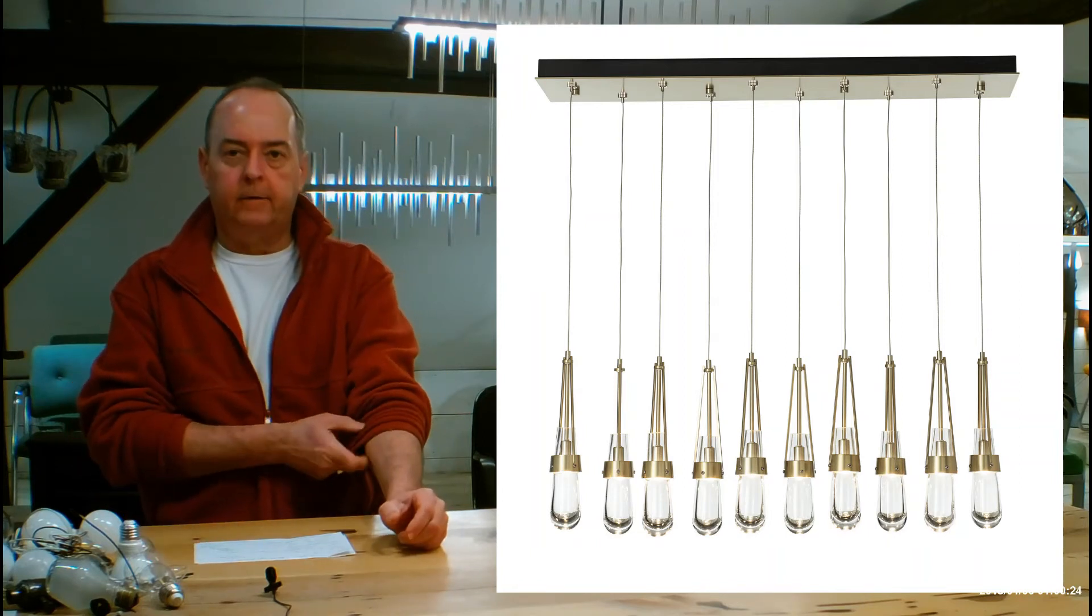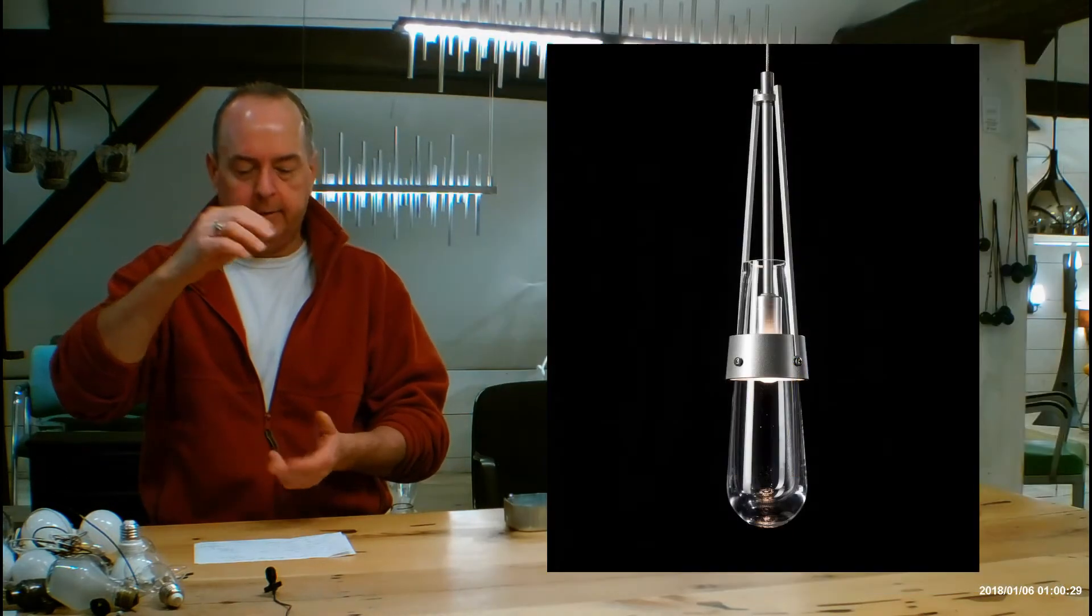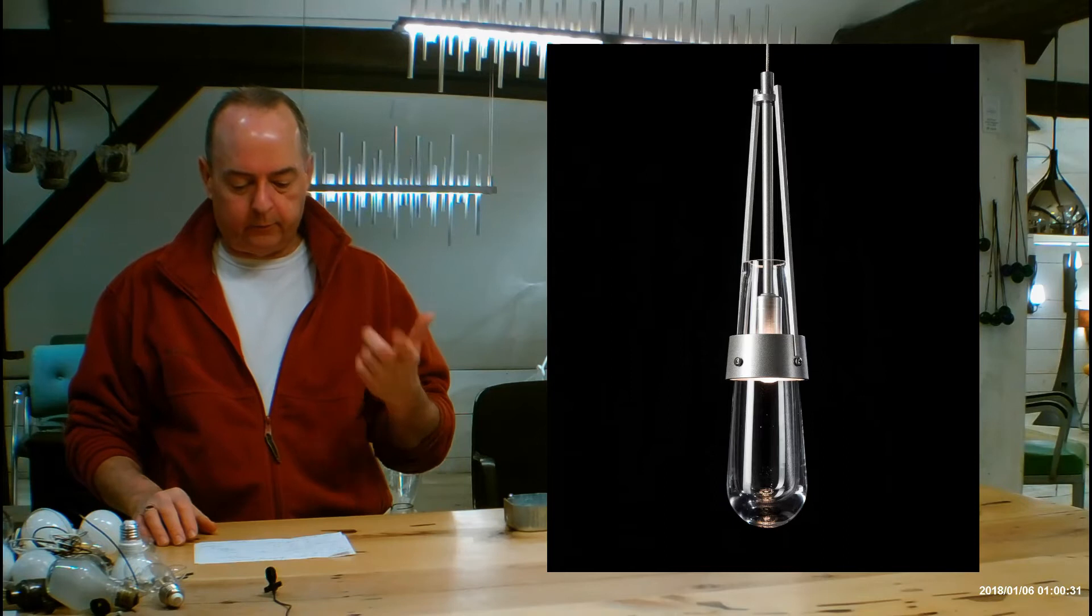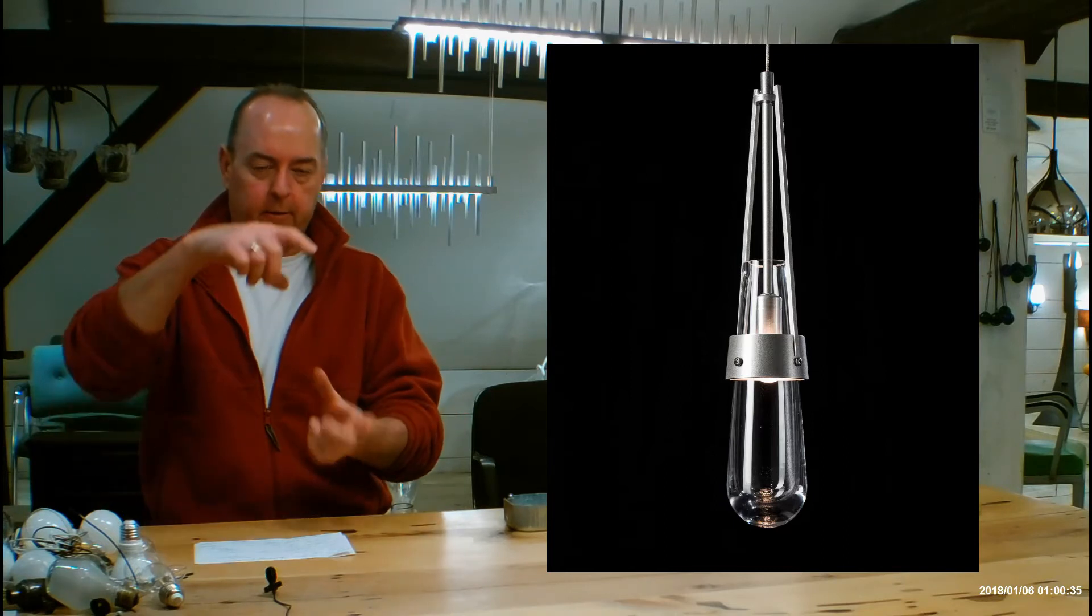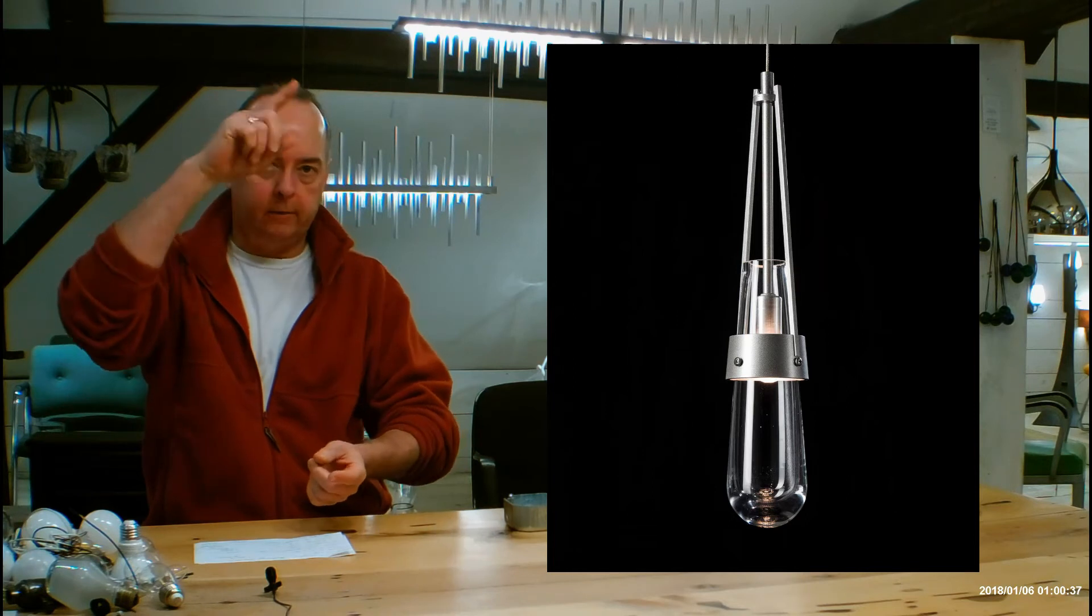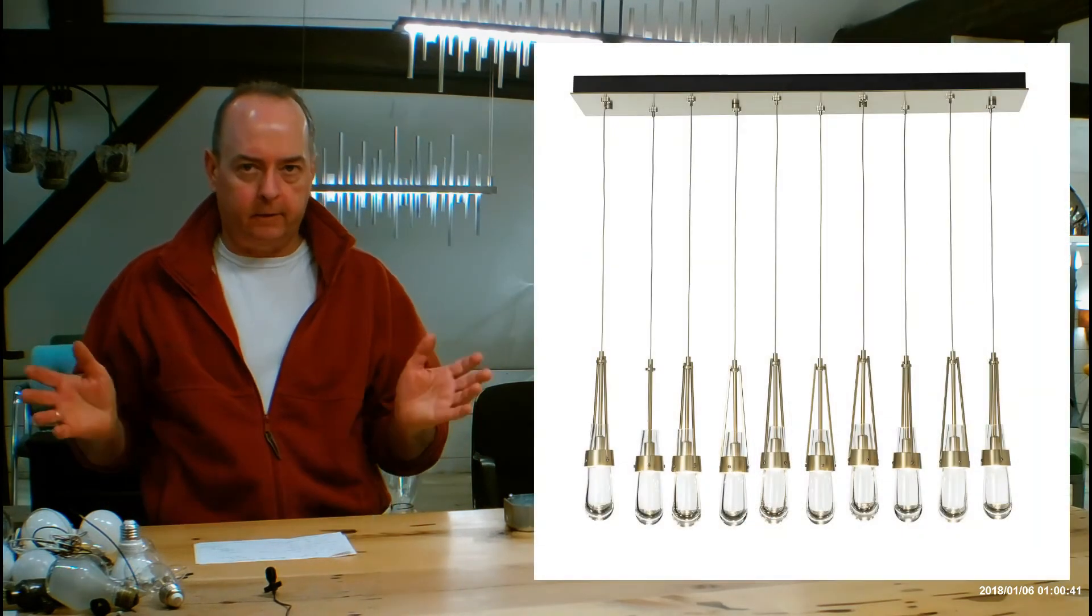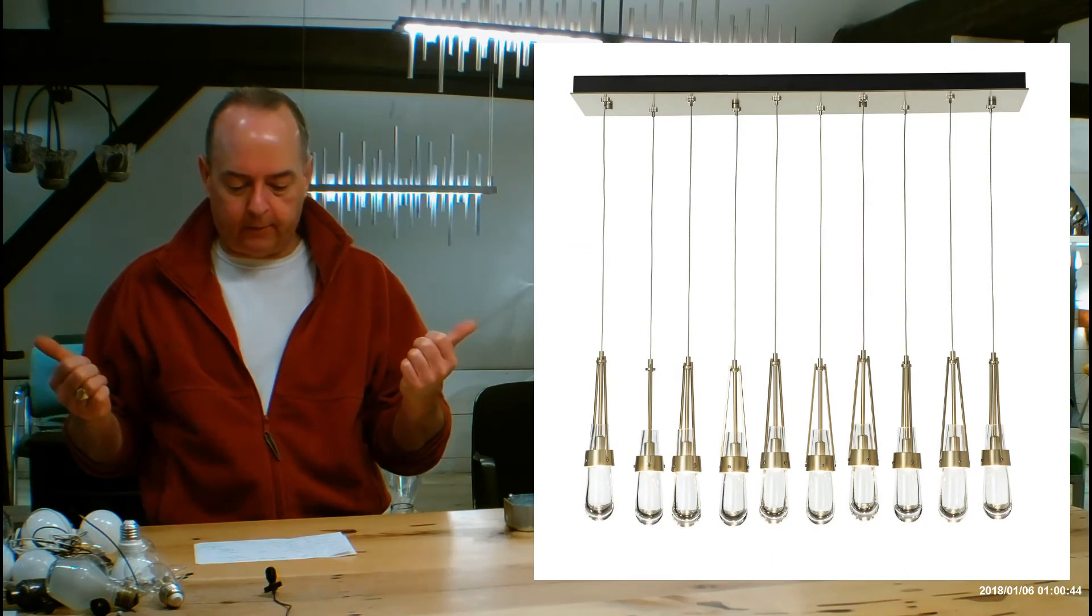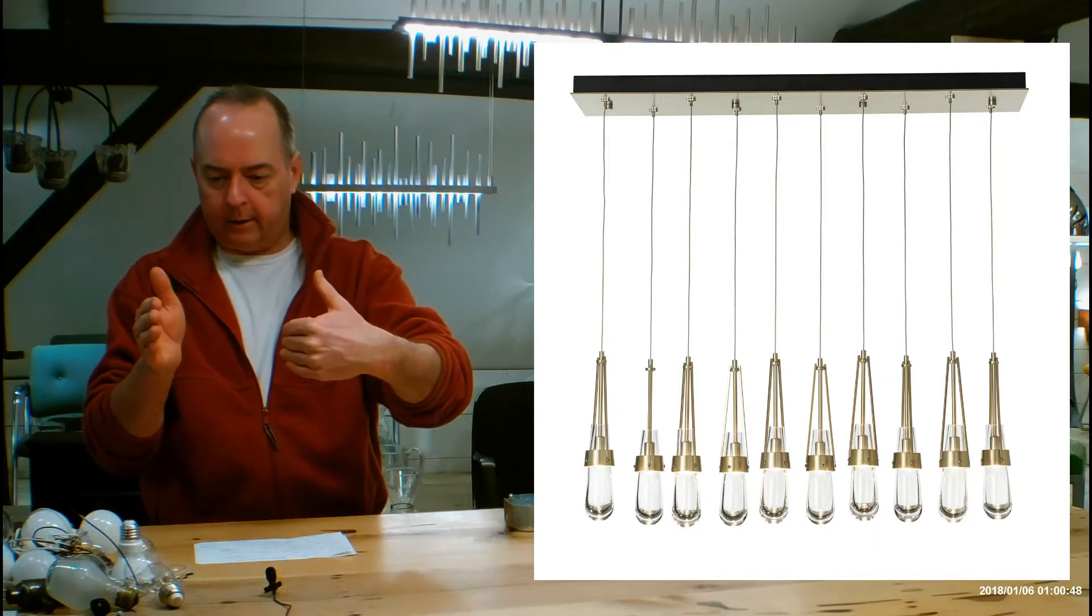Let's get into the size of the fixture. First, the individual parts—you've got ten of these. Each is 16 inches high and about 3 inches wide, which is the glass with the holder before you get to the cable. When we talk about the whole fixture, left to right we're looking at 44.5 inches.